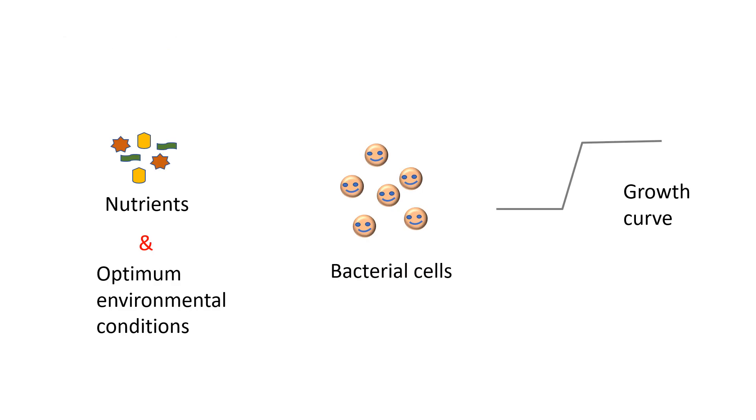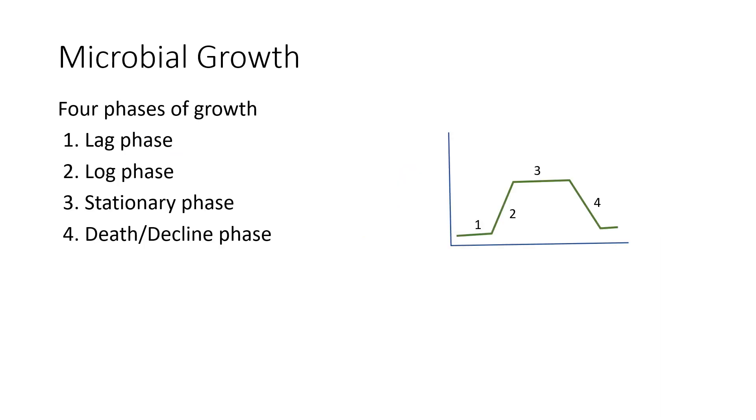Bacteria show a predictable growth pattern when enough nutrients and optimal environmental conditions are present. This growth pattern can be presented as a growth curve. In laboratory, upon inoculation into a new nutrient medium, the bacteria show four distinct phases of growth: lag phase, log phase, stationary phase, and death phase.